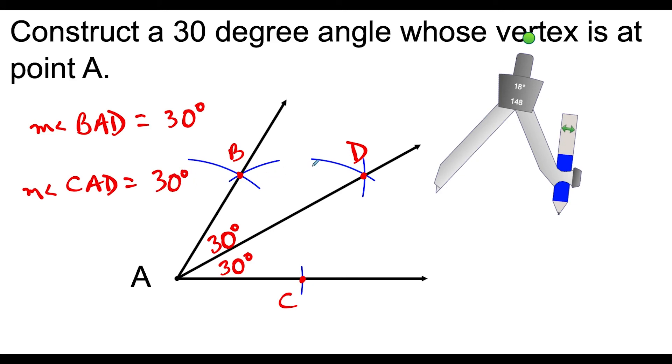But either way, this completes the construction of our 30 degree angle. So we construct a 60 degree angle, and then just do the angle bisector construction.